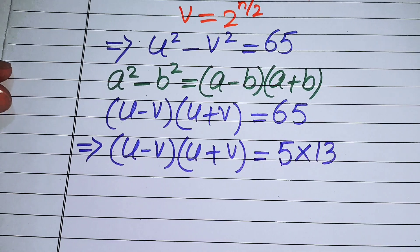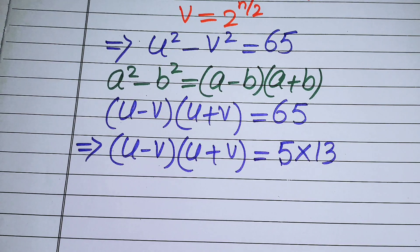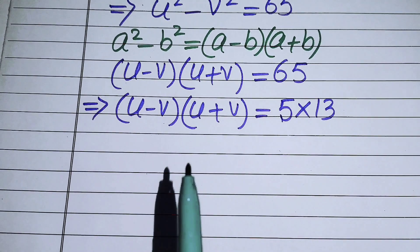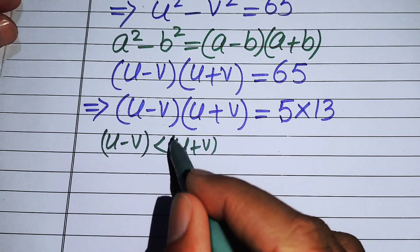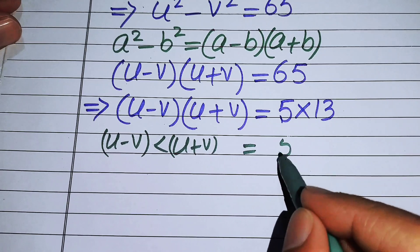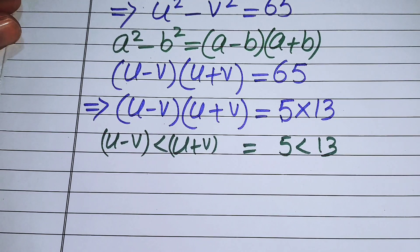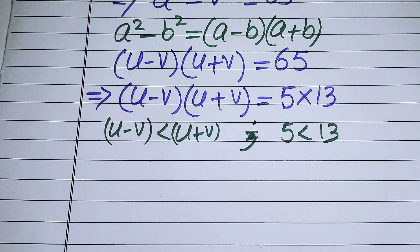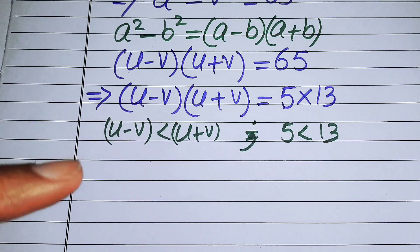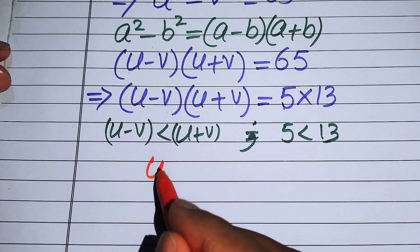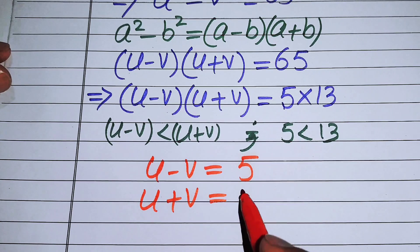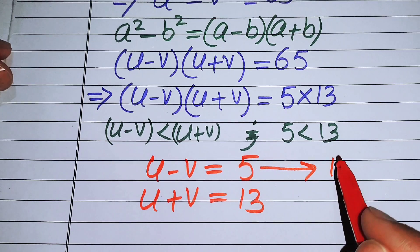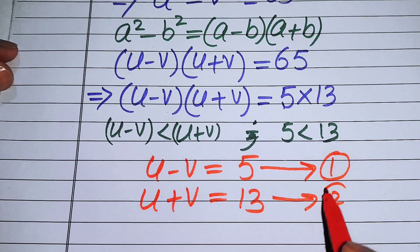Now we compare both sides. Since u minus v is less than u plus v, and similarly 5 is less than 13, we equate u minus v equals 5 as equation one, and u plus v equals 13 as equation two.